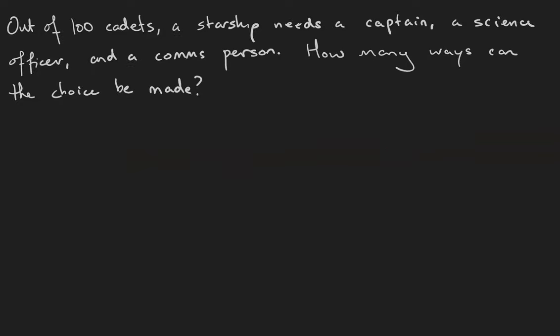Here's a related question. Out of 100 cadets, a starship needs a captain, a science officer, and a communications person. How many ways can that choice be made?